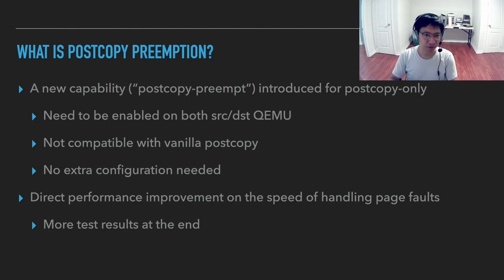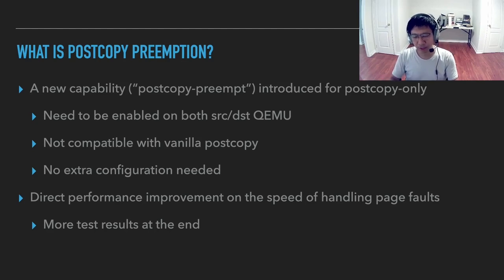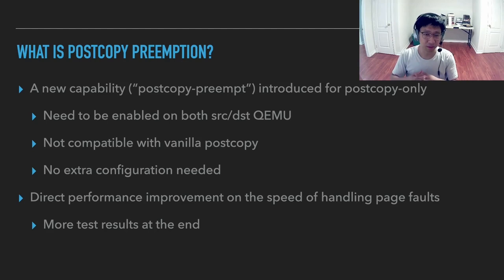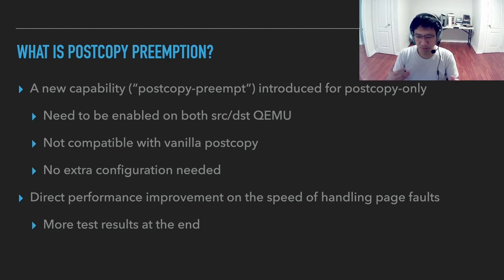One good thing to mention is that there is no extra configuration needed for the post-copy preemption feature. Why do we need a new capability rather than making it the default? It's simply because this new mode of post-copy changes the live migration stream — the protocol between source and destination — so it just won't work with old binaries. That's why we need a new capability. Otherwise, if somebody is using post-copy, it should really be worthwhile to try this preemption mode because it should only improve performance on page fault request latencies. To be compatible with older post-copy, we just need a new capability bit.